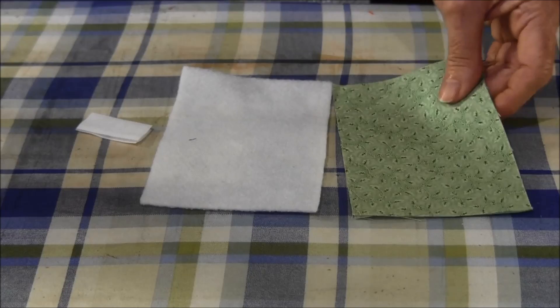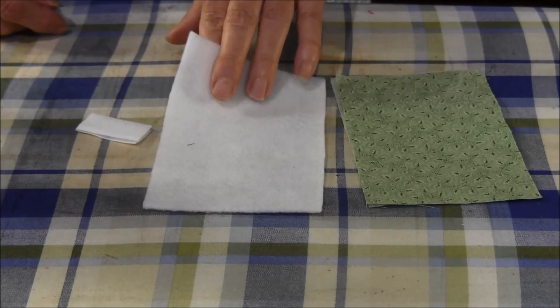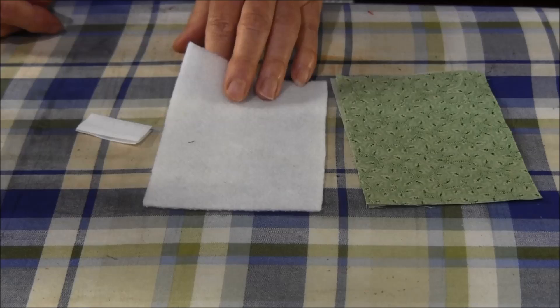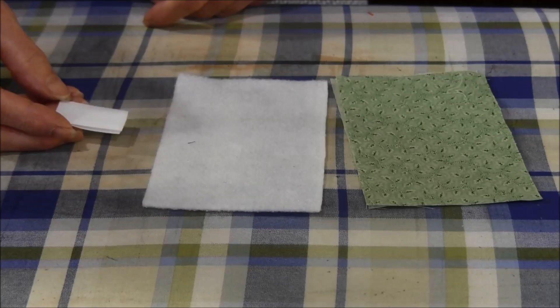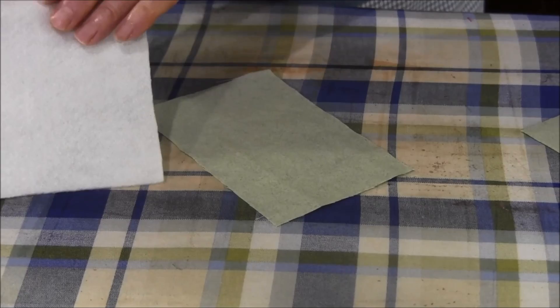For the small wrap you will need scrap fabric, two pieces that are three and a half by five and a half inches, a scrap piece of fusible interface or fleece that is three and a half by five and a half, and a piece of sew-on velcro that is about three quarters of an inch wide by one and a half inches.